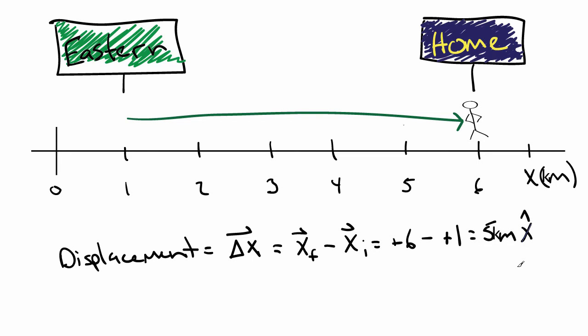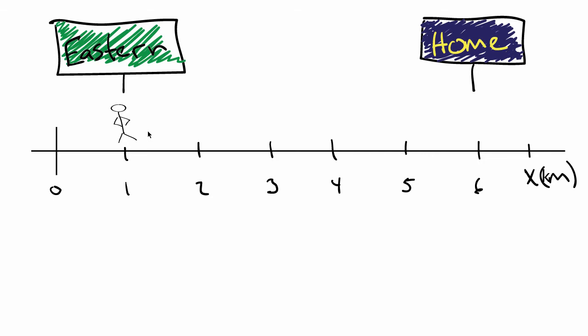You know this is a vector because I gave you a direction, the positive x direction. Think about what the total displacement for your trip would be if you started at campus, went home, then went back again. Since it's only the starting and ending points that matter, it would have to be 0.